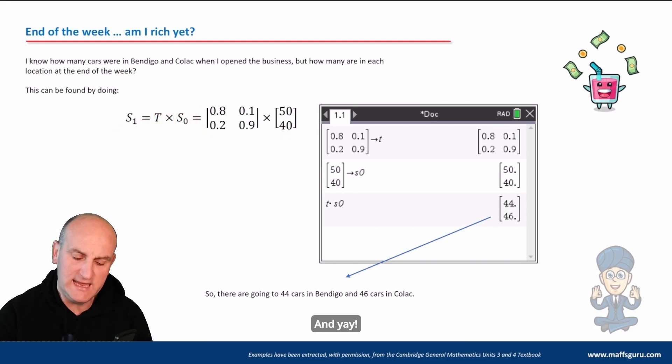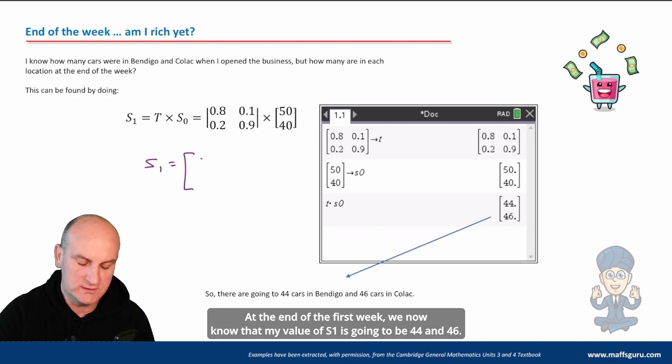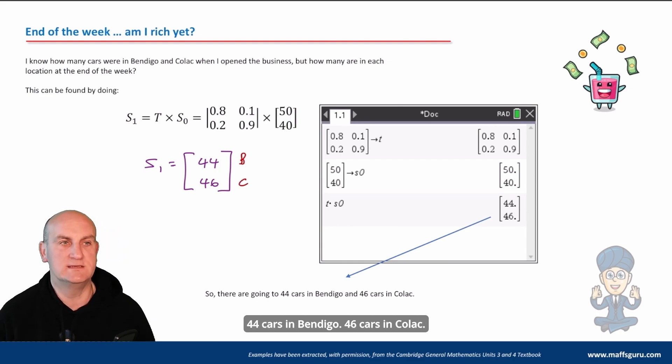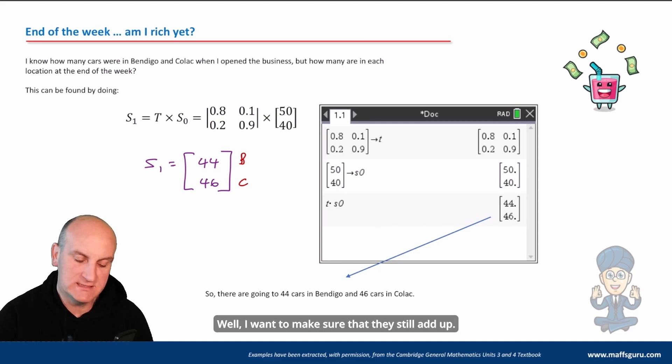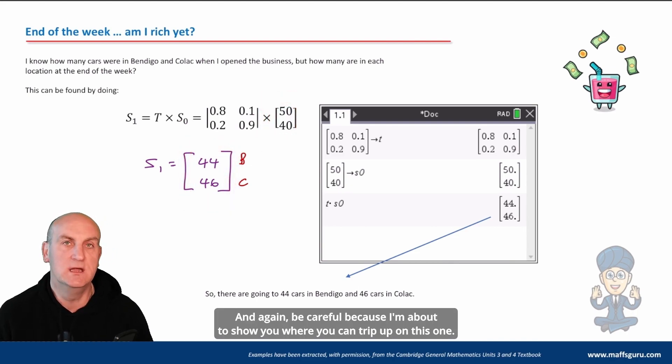And yay, at the end of the first week we now know that my value of S₁ is going to be 44 and 46. What does that mean in real world? Well, there is my Bendigo, there is my Colac. 44 cars in Bendigo, 46 cars in Colac. Yay! Really yay? Well, I want to make sure they still add up. I started with 90 cars and I still got 90 cars. And again, be careful because I'm about to show you where you can trip up on this one.